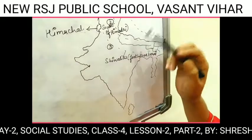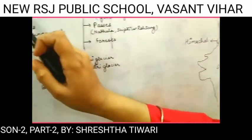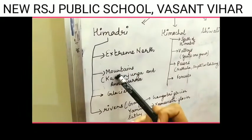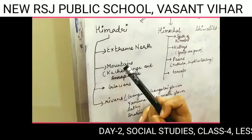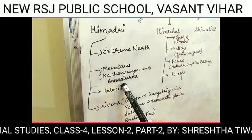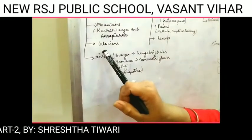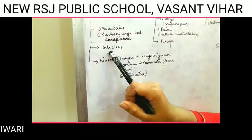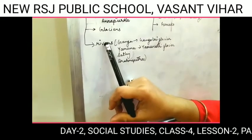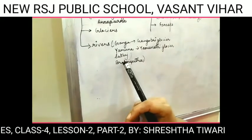Now I am going to explain what is found in Himadri, Himachal, and Shivaliks. Himadri is the extreme north. In Himadri, many mountains are found, but two famous ones are Kanchanjangha and Annapurna. There are also many glaciers originated from the Himalayas — two famous ones are Gangotri and Yamunotri. Rivers also originate from the Himalayas: Ganga, Yamuna, Satlaj, and Brahmaputra.